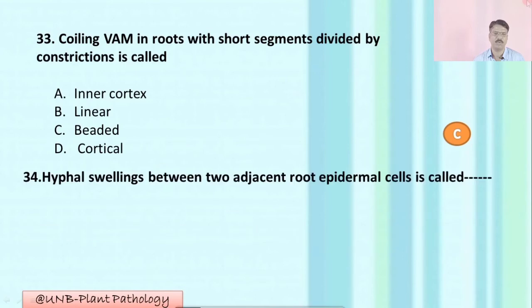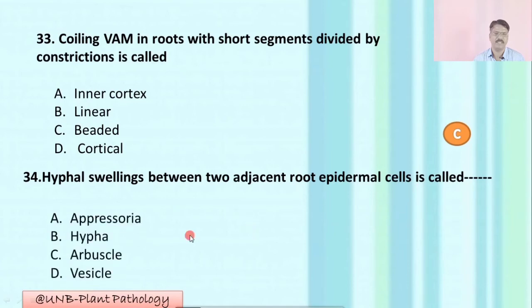Question number thirty-four: Hyper-swelling between two adjacent root epidermal cells is called — A: appressorium; B: hypha; C: arbuscule; D: vesicle. The correct option is A: appressorium.